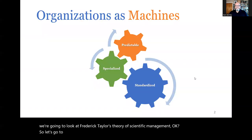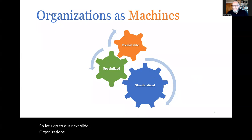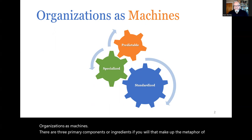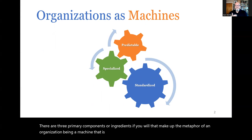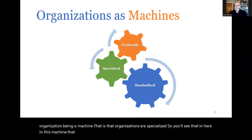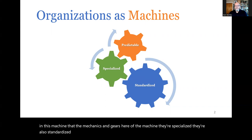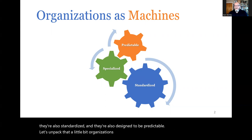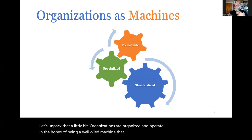Organizations as machines. There are three primary components — or ingredients — that make up the metaphor of an organization being a machine: organizations are specialized, standardized, and designed to be predictable. Organizations are organized and operate in the hopes of being a well-oiled machine that you just start up, like a car, and you want it to run. When you and I get in our cars, we're expecting these three things to happen.